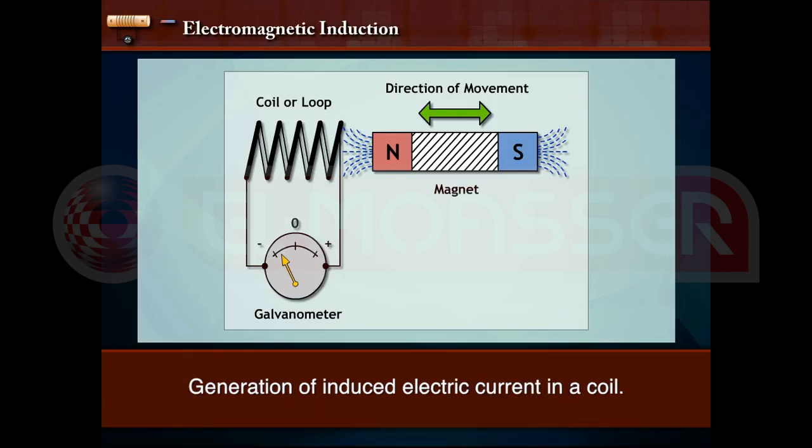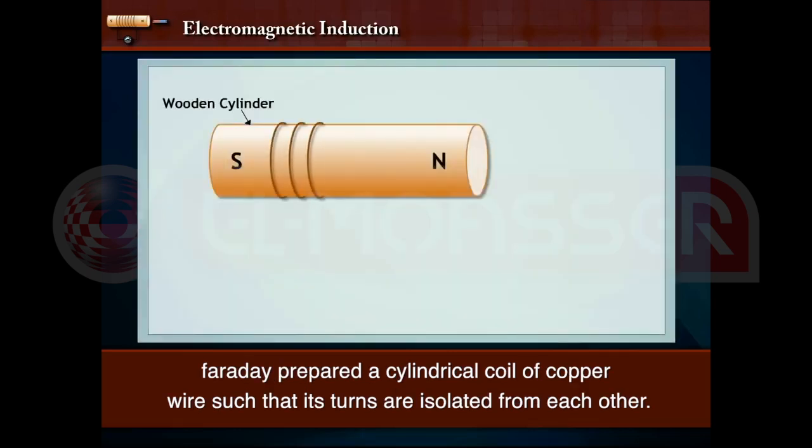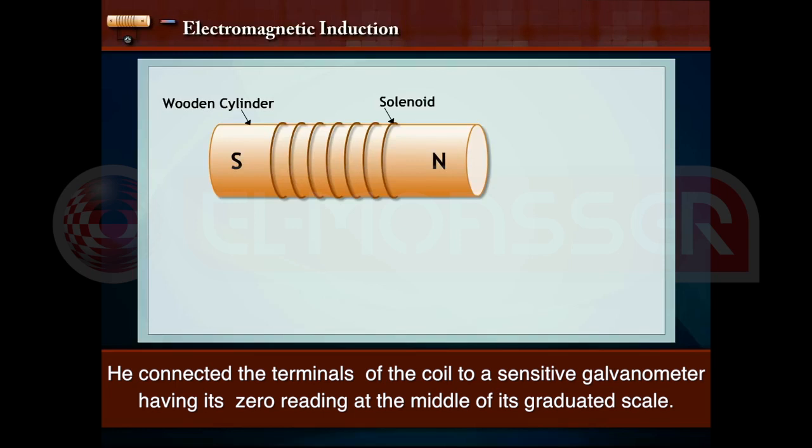To generate induced electric current in a coil, Faraday prepared a cylindrical coil of copper wire such that its turns are isolated from each other. He connected the terminals of the coil to a sensitive galvanometer having its zero reading at the middle of its graduated scale.